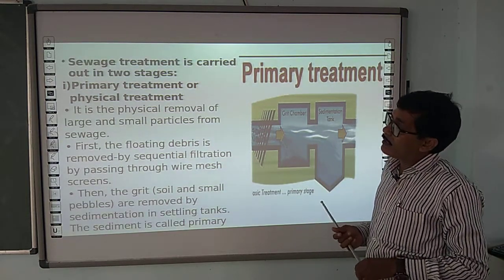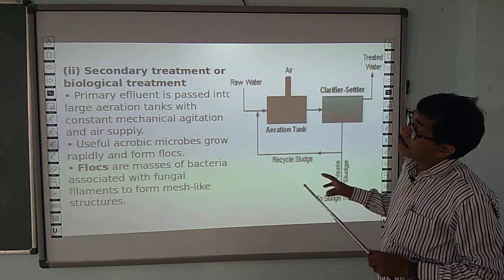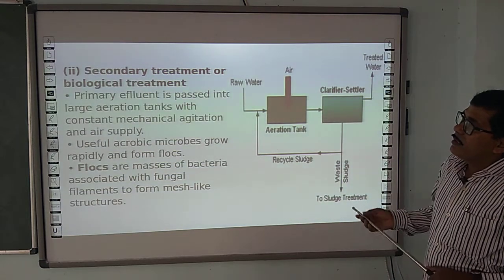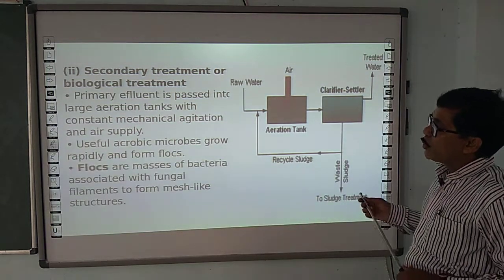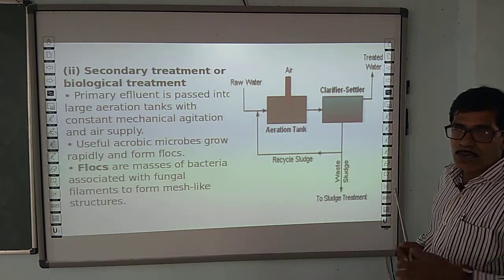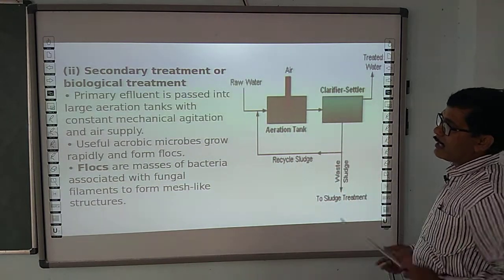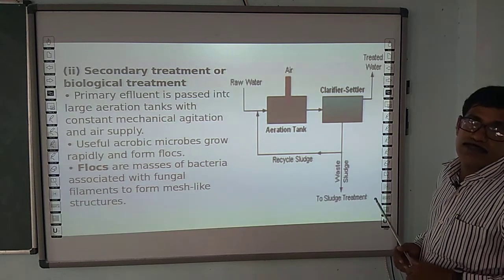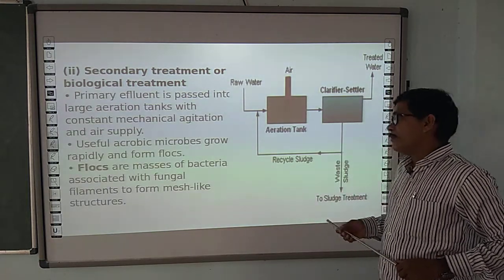Now we have secondary treatment. In secondary treatment, the primary effluent is passed into a large aeration tank with constant mechanical agitation and air supply, where useful aerobic bacteria grow rapidly. After growing, flocs are formed. Flocs are masses of bacteria associated with fungal filaments that form a mesh-like structure.